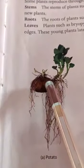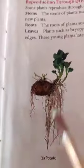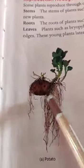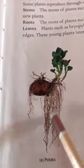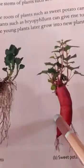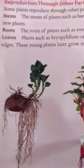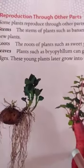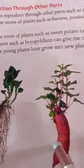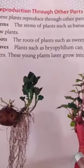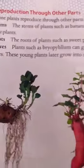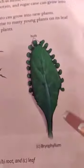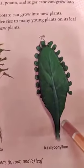This one — potato. You can see the roots all come here. Next, sweet potato. Next one, bryophyllum leaf.